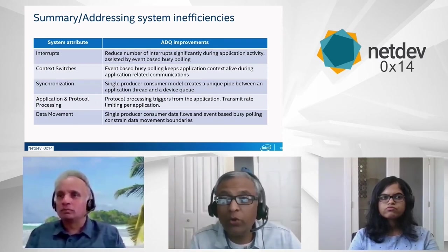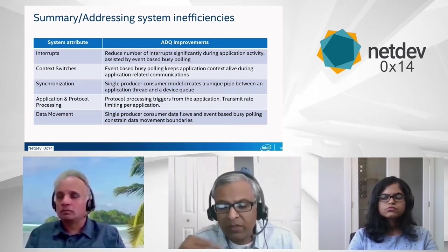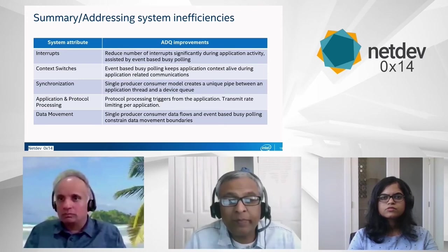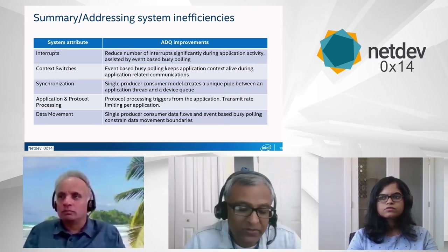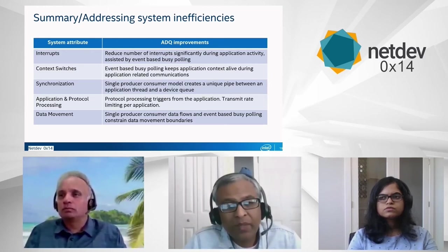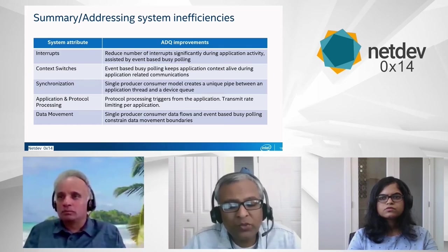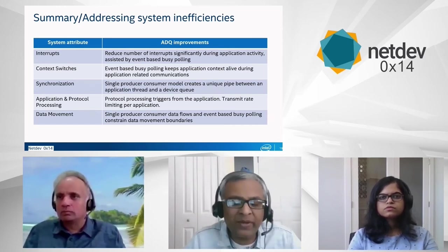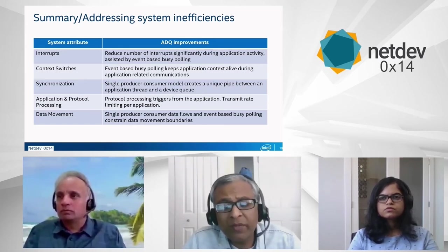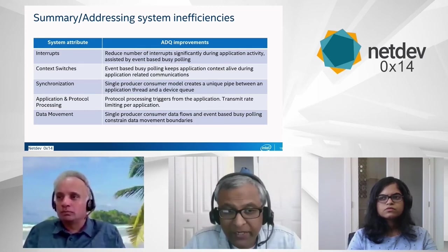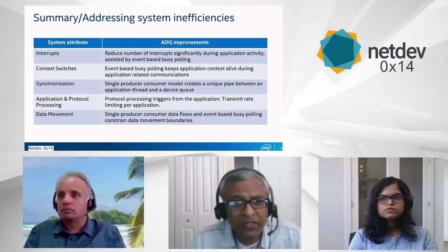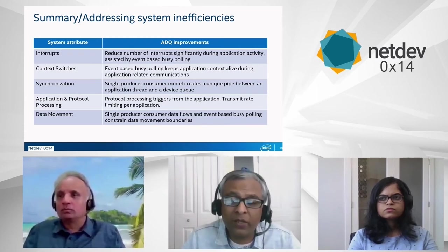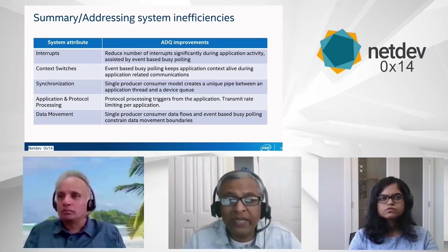The next two inefficiencies are about how to improve working set locality. When you have the kernel-based protocol implementation, it is challenging for your application and protocol processing to operate in the same context. Here again, with event-based busy polling, we let the application decide when to trigger the busy polling. Since the busy polling is happening in the context of the application, the protocol processing naturally happens in the context of the application. We could do this because now we have dedicated queues per application, so we can put the ownership back onto the application — how they want to drain the queue and when they want to drain it. As part of draining the queue, the protocol processing will naturally happen in the application context. As a result, your working set locality issue is also addressed.